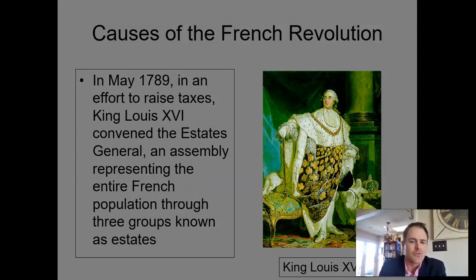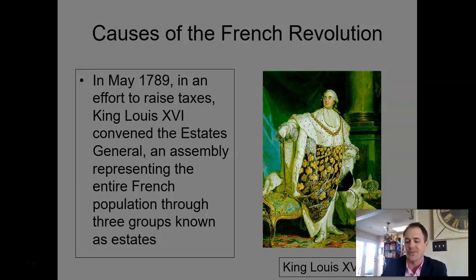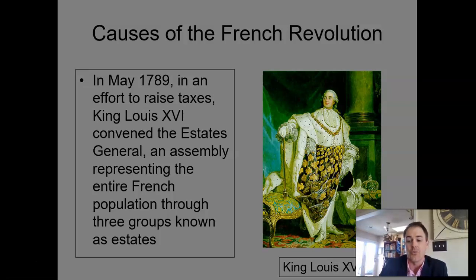Much more central to the French Revolution is the economic factor. Yes, they're inspired by Enlightenment ideals — much of the philosophes were French — but in May 1789, the government needed to raise taxes because the French government was broke. They spent a lot of money helping the Americans fight their revolution, and also fighting other wars. The French court, represented by King Louis XVI, spent extravagantly on massive parties and clothes. So they're broke in 1789. He calls the Estates General, their assembly that had not met in over 100 years, in order to fix the budget problem.